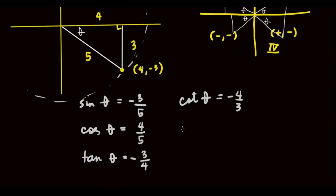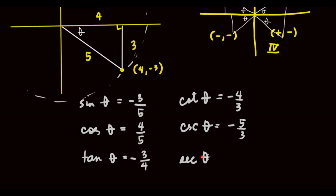Cosecant theta is the reciprocal of sine, so it's negative five over three. Cosine theta is four over five, and from that we get secant theta, which is the reciprocal of cosine: five over four.